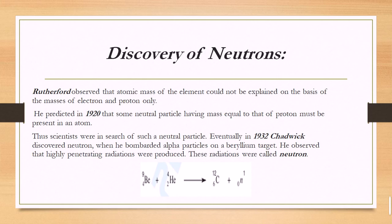Moving to the discovery of the neutron — Rutherford observed that the atomic mass of elements could not be explained on the basis of the masses of electrons and protons alone. In 1920, it was proposed that some neutral particles having mass equal to that of the proton must be present in the structure of an atom. Eventually, in 1932, Chadwick discovered the neutrons when he bombarded alpha particles on a beryllium target.